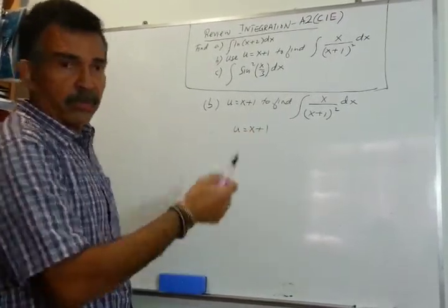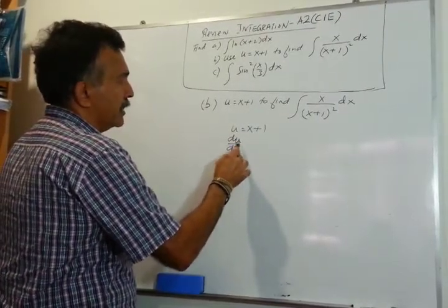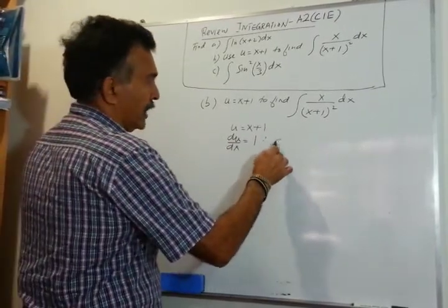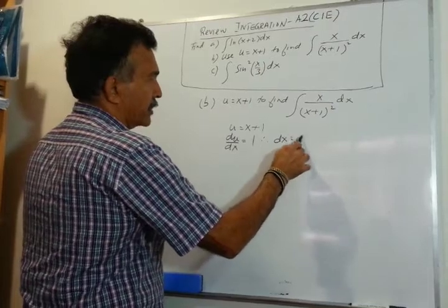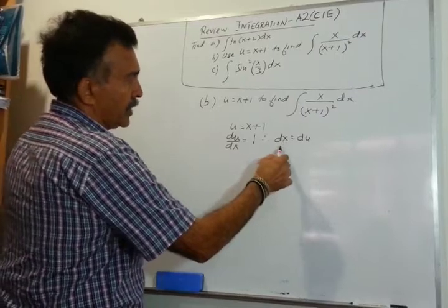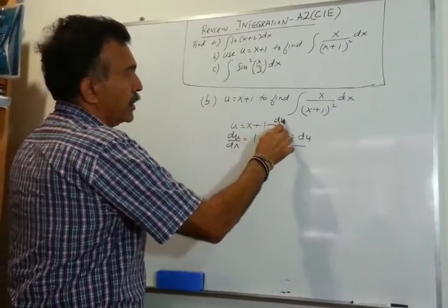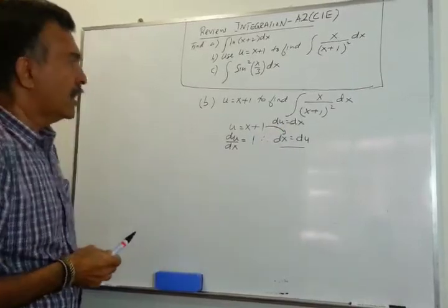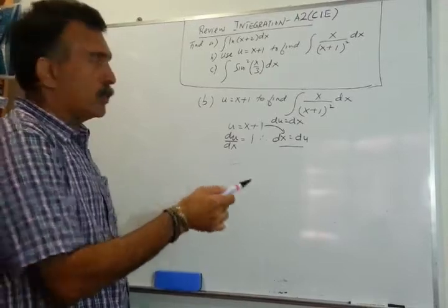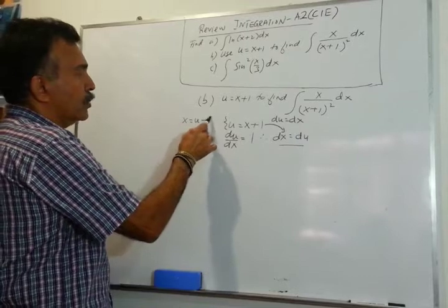What do we do next? We differentiate. So du/dx equals 1, therefore dx equals du. Also, if u equals x+1, then x equals u minus 1 — we can use that.